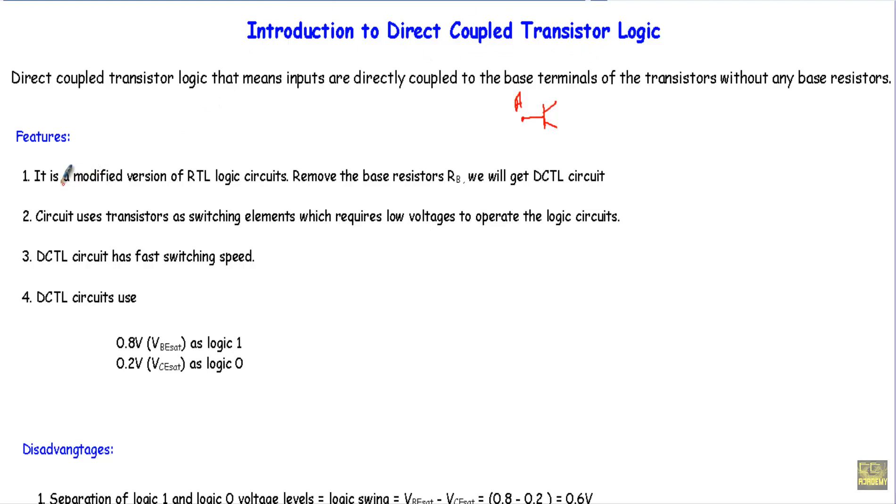First, it is a modified version of RTL logic circuits. If I remove the base resistors from our RTL circuit, we will get our DCTL circuit. That means the working principle of this DCTL circuit will be more or less similar to our RTL logic circuits. The DCTL circuits use transistors as switching elements which require low voltage to operate our logic circuits.